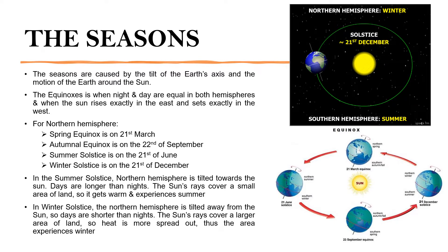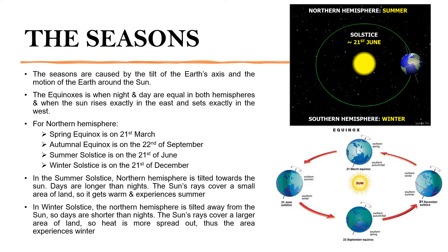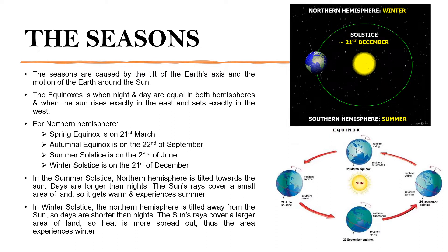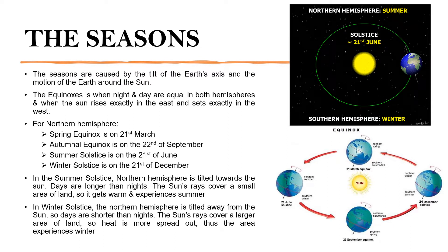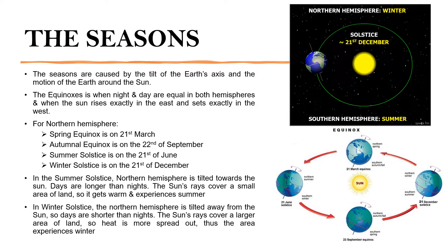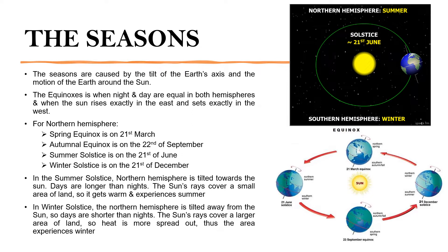In the summer solstice of the Northern Hemisphere, everything above the equator — which is the Northern Hemisphere — is tilted towards the Sun. So it spends more time in sunlight and has longer days and shorter nights, getting more hours of sunshine. The land heats up, and this sunshine is focused on a smaller area of land, which makes the land heat up and the area experiences summer.